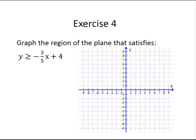y is greater than or equal to negative 3 fifths x plus 4. Again, I am going to think y equals negative 3 fifths x plus 4, and I will use a solid line since it is an or-equal-to inequality. Plotting (0, 4) and using the slope of negative 3 over 5 to plot several more points — down 3, right 5, or up 3 and left 5. There are several points, and I draw the solid line through them.